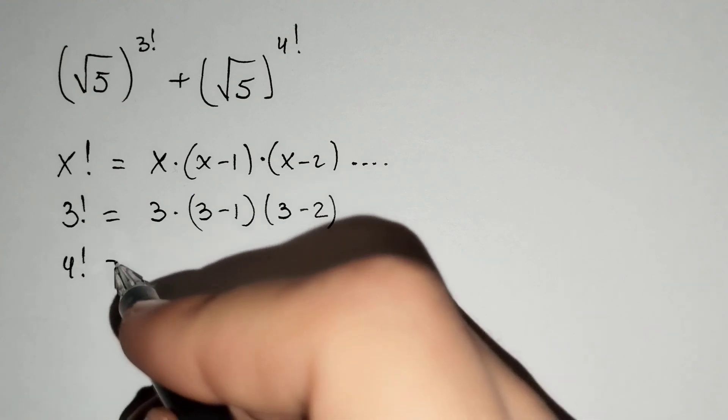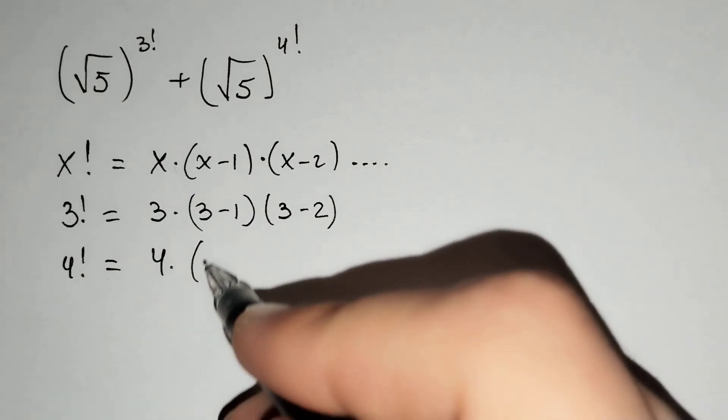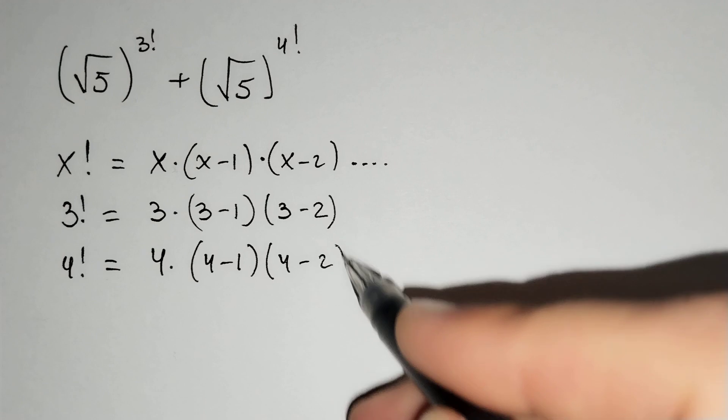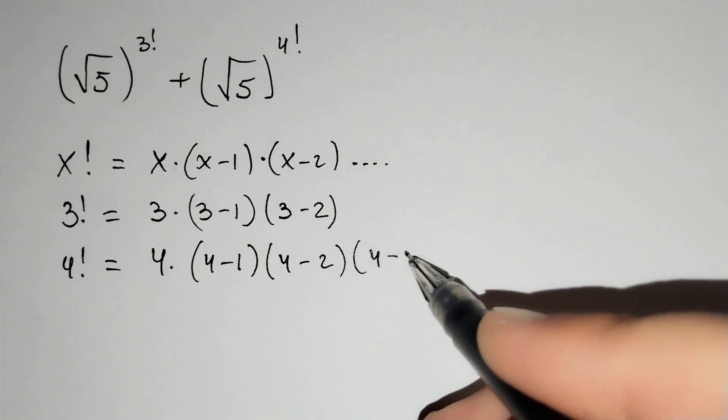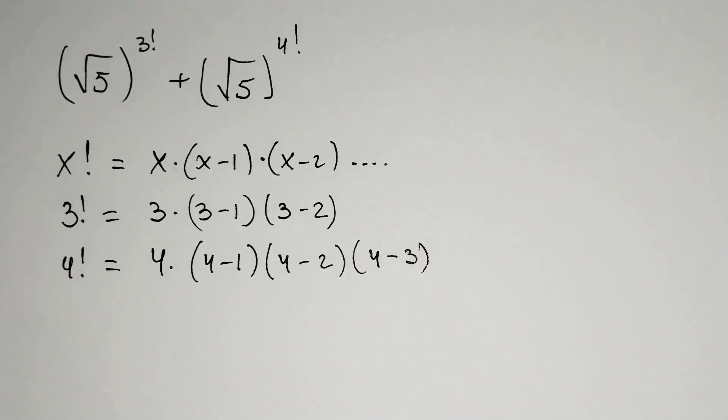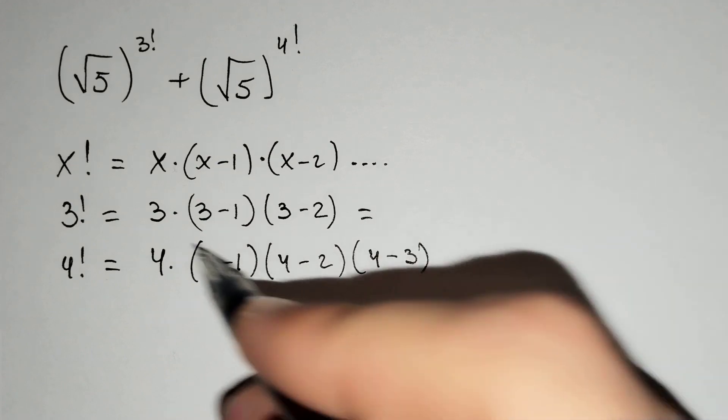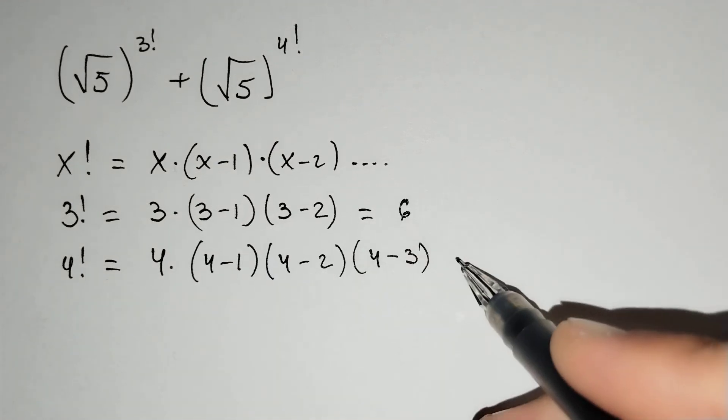And 4 factorial equals to 4 times 4 minus 1 times 4 minus 2 times 4 minus 3. 3 factorial equals to 3 times 2 times 1 and it equals 6.